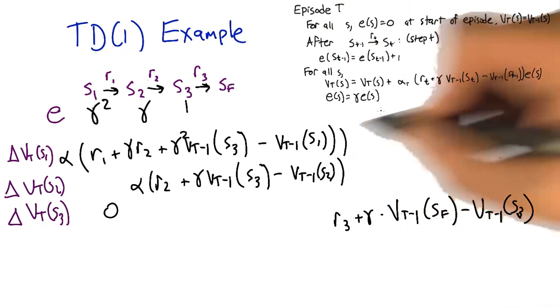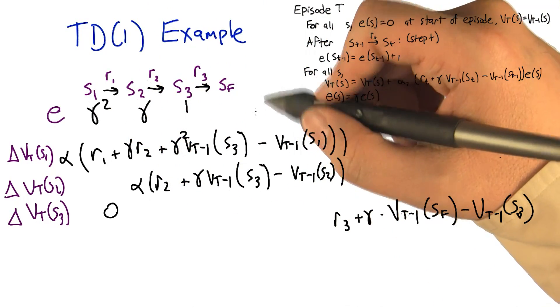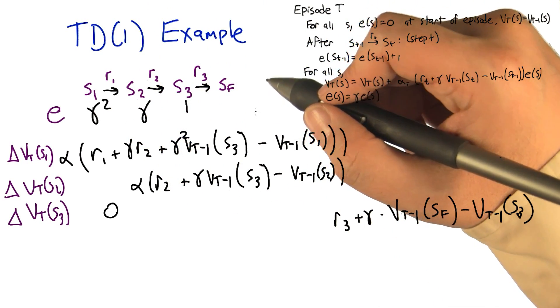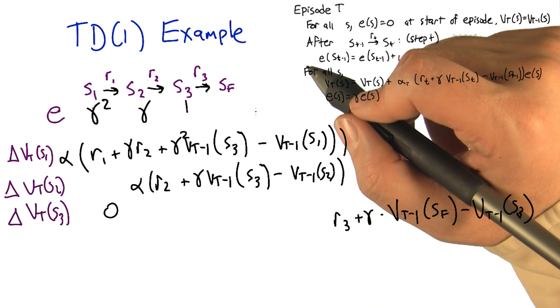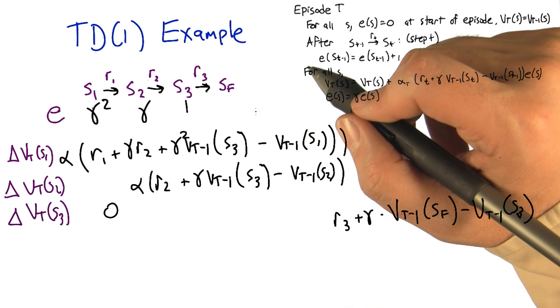Right, which you've managed to make gamma squared. So the eligibility isn't just whether you've seen a state before, it's actually keeping track of how long ago you saw that state. Good.